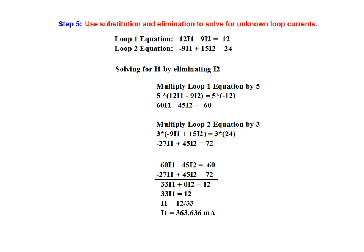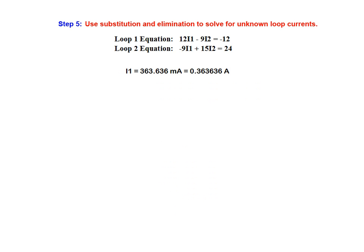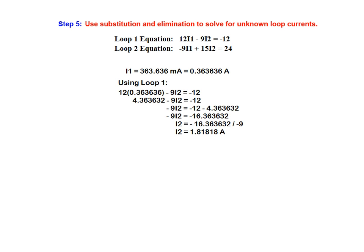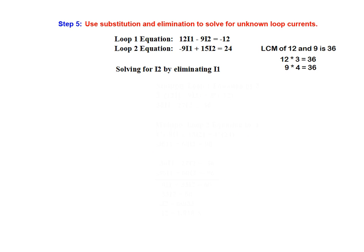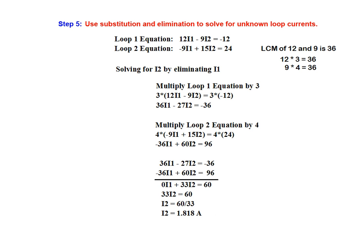Once the I2 term has been eliminated, we proceed by solving for I1. Having determined the value of the I1 loop current, we use substitution to obtain the I2 loop current. Using the loop 1 equation, we substitute in the value for I1 and calculate the value of I2. To confirm validity, we could also substitute the I1 value into the loop 2 equation and should reach the same result. It is also important to note that we could just as easily have solved for I2 first by eliminating I1 instead.